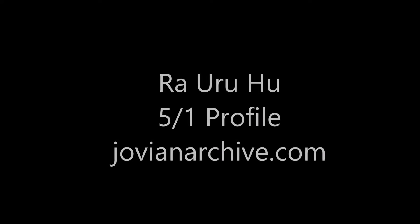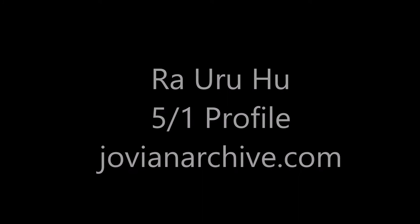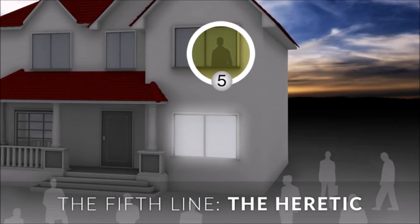Now we come to the beginning of the left-angle process, the four left-angle profiles. The geometry of the left-angle is the geometry of transpersonal karma. It is the polarity to the right-angle process — the right-angle process and its self-absorption, its personal destiny, the fulfillment of its process through itself. And the left-angle process, the transpersonal karma, in which the fulfillment of purpose can only be achieved through interaction with the other.